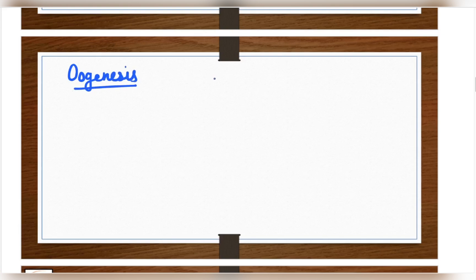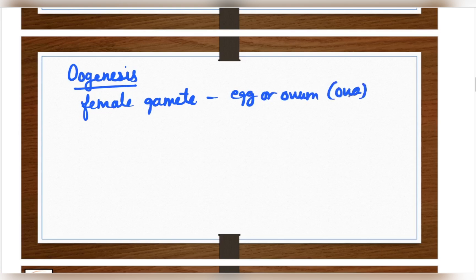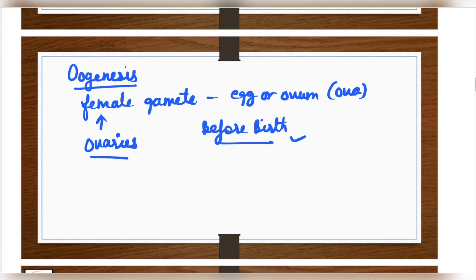So first of all, what is oogenesis? Oogenesis is a process in which the female gamete is developed. We are basically talking about egg or ovum — singular is ovum, plural is ova. They are produced in the ovaries; we have a pair of ovaries in the human. One very interesting thing about oogenesis is that it begins before birth — during the fetal developmental stage.